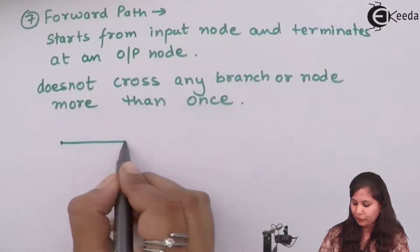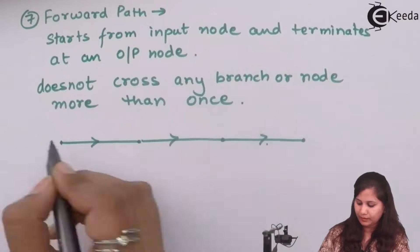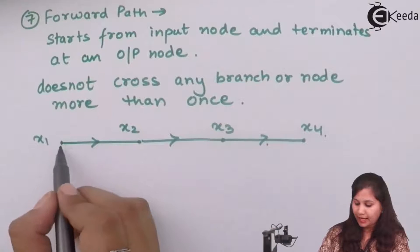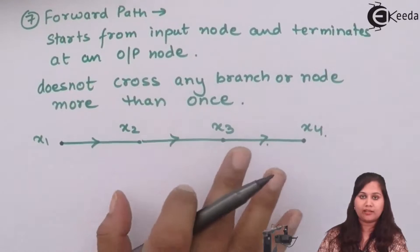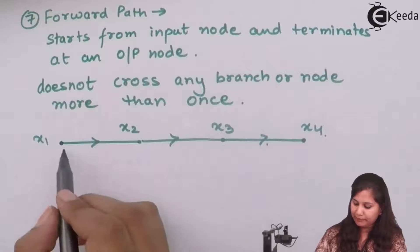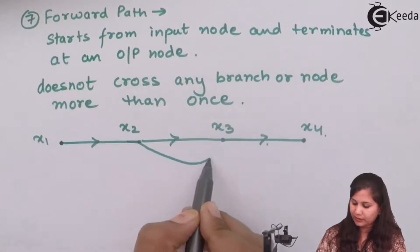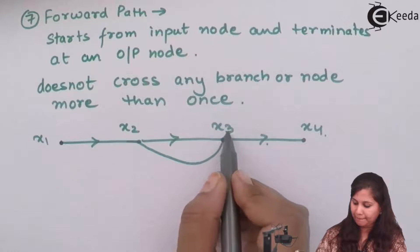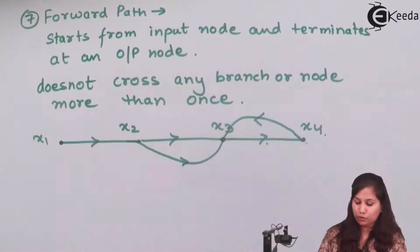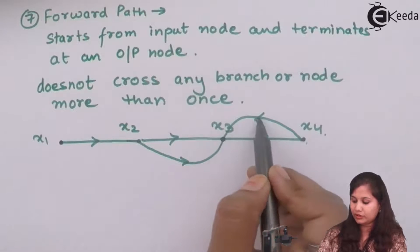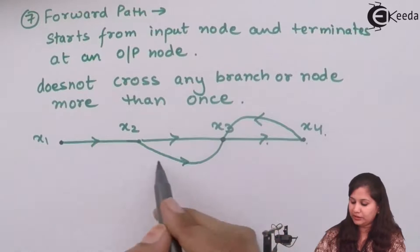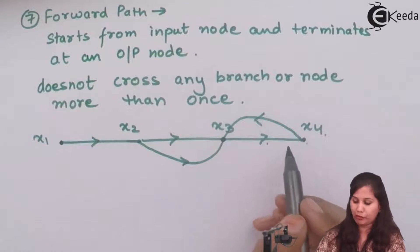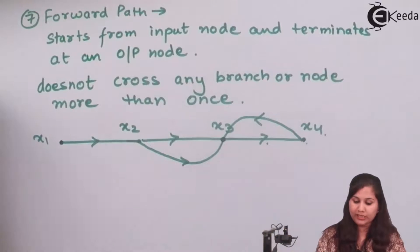A forward path starts from the input node and terminates at the output node and no node is crossed more than once. For example, starting from X1, going through X2, X3, to X4 - this is the forward path. If a path crosses back on itself, it becomes a loop, not a forward path.